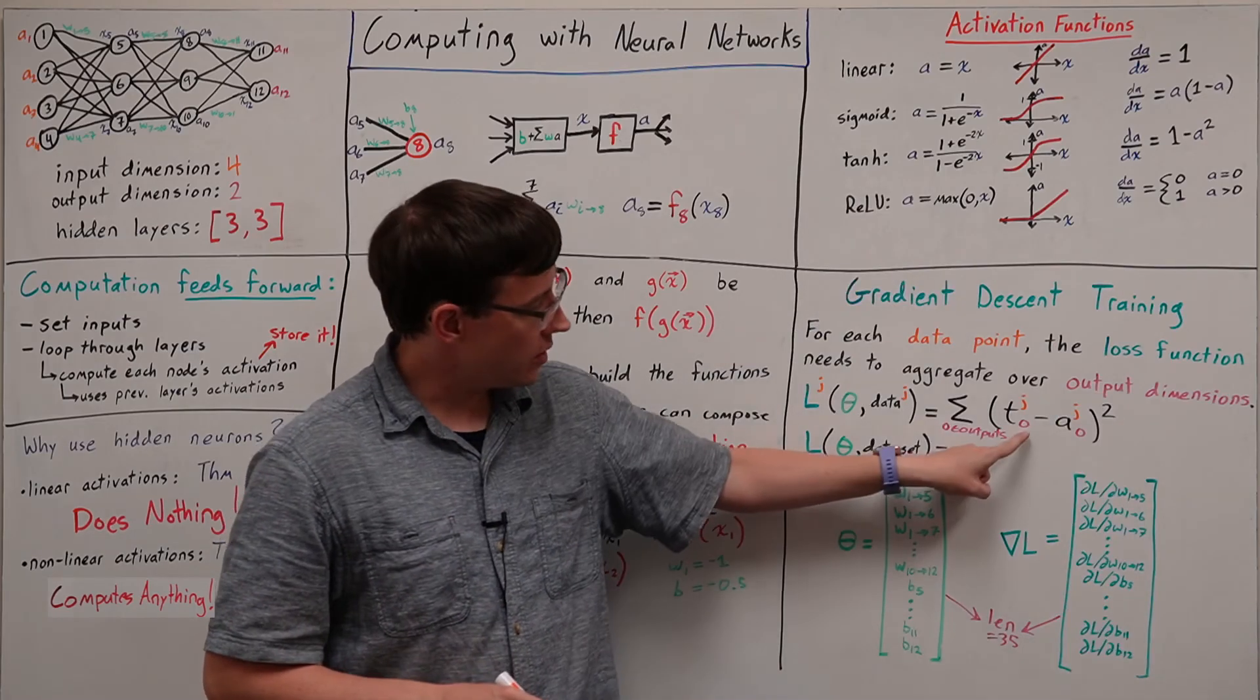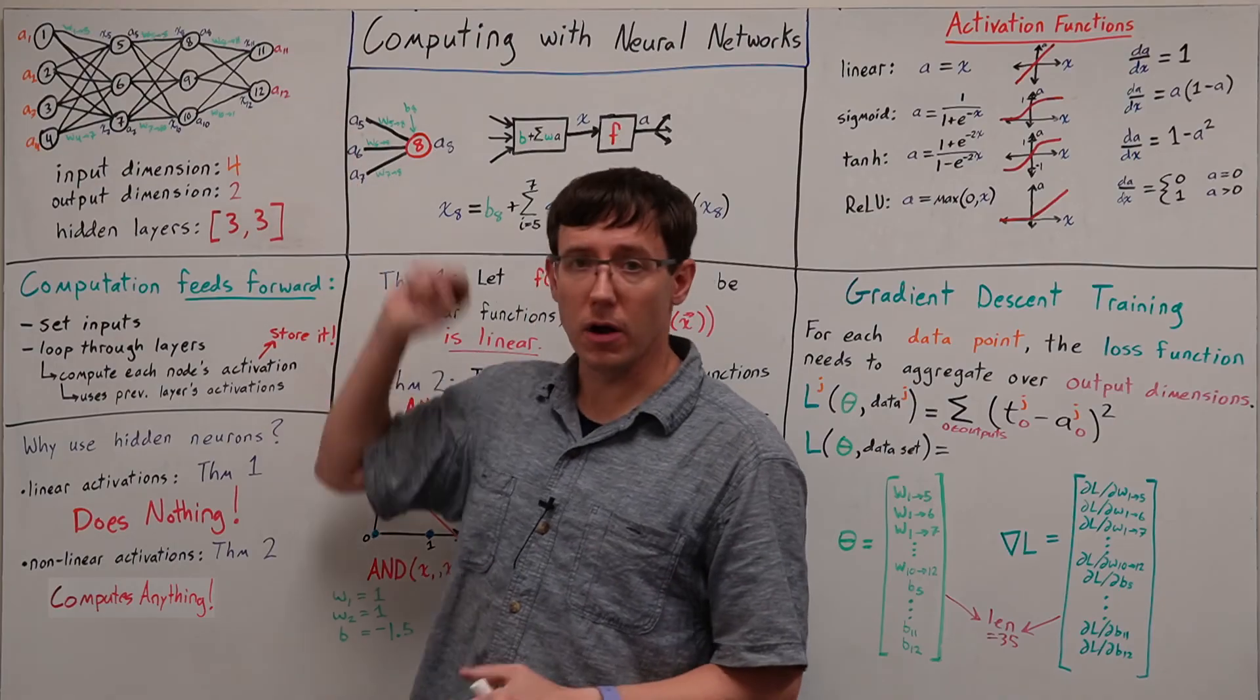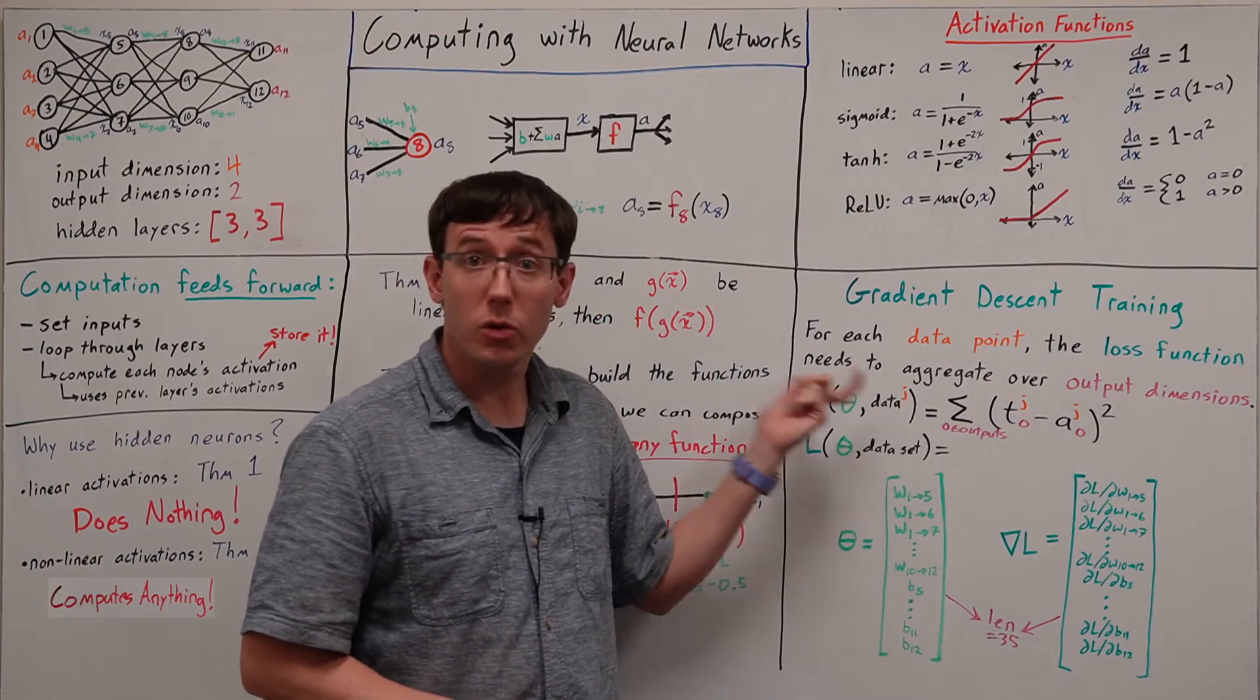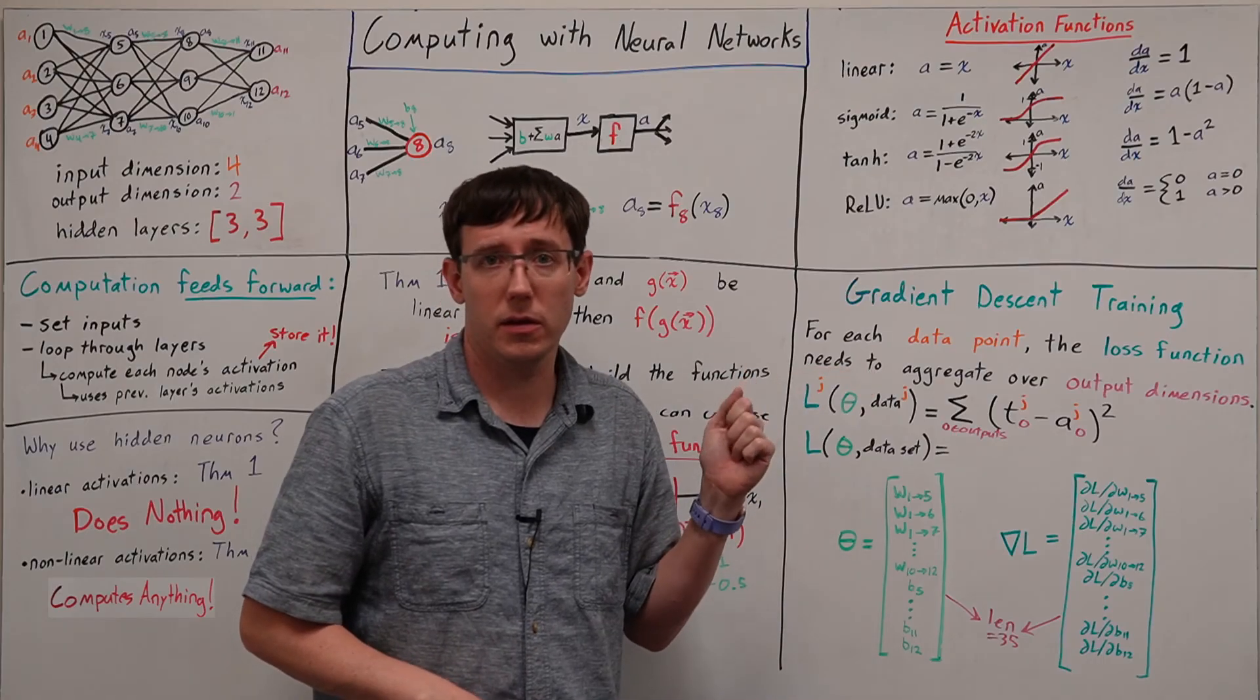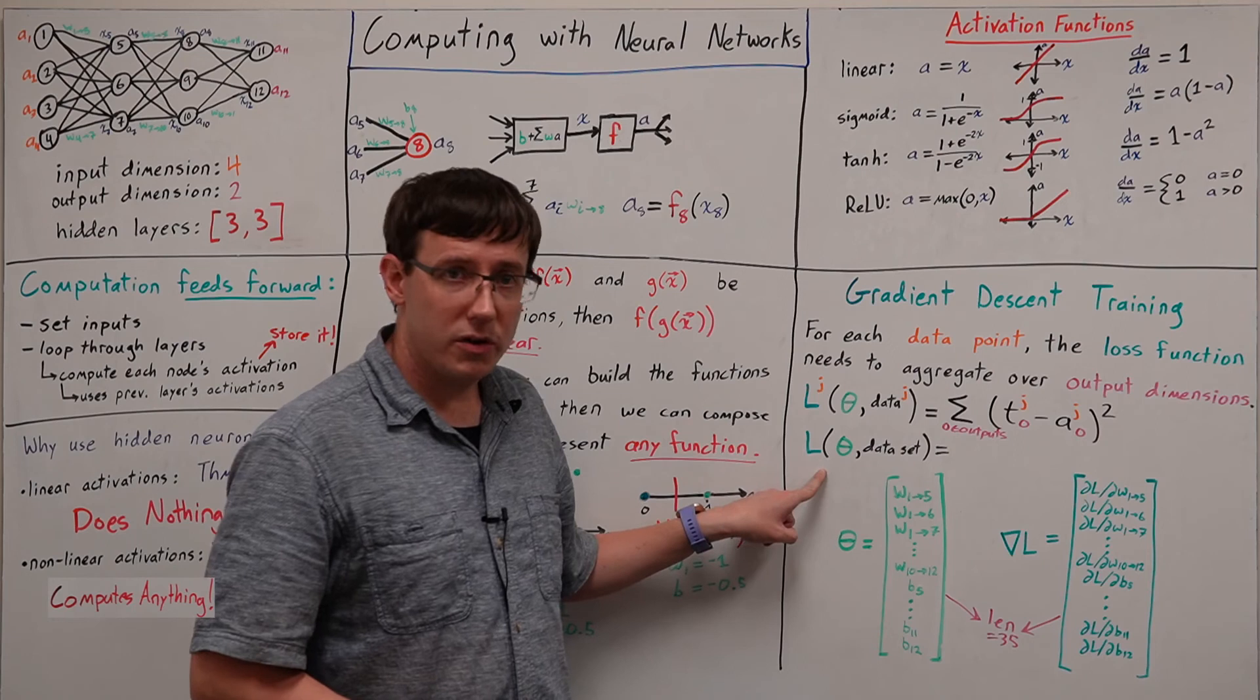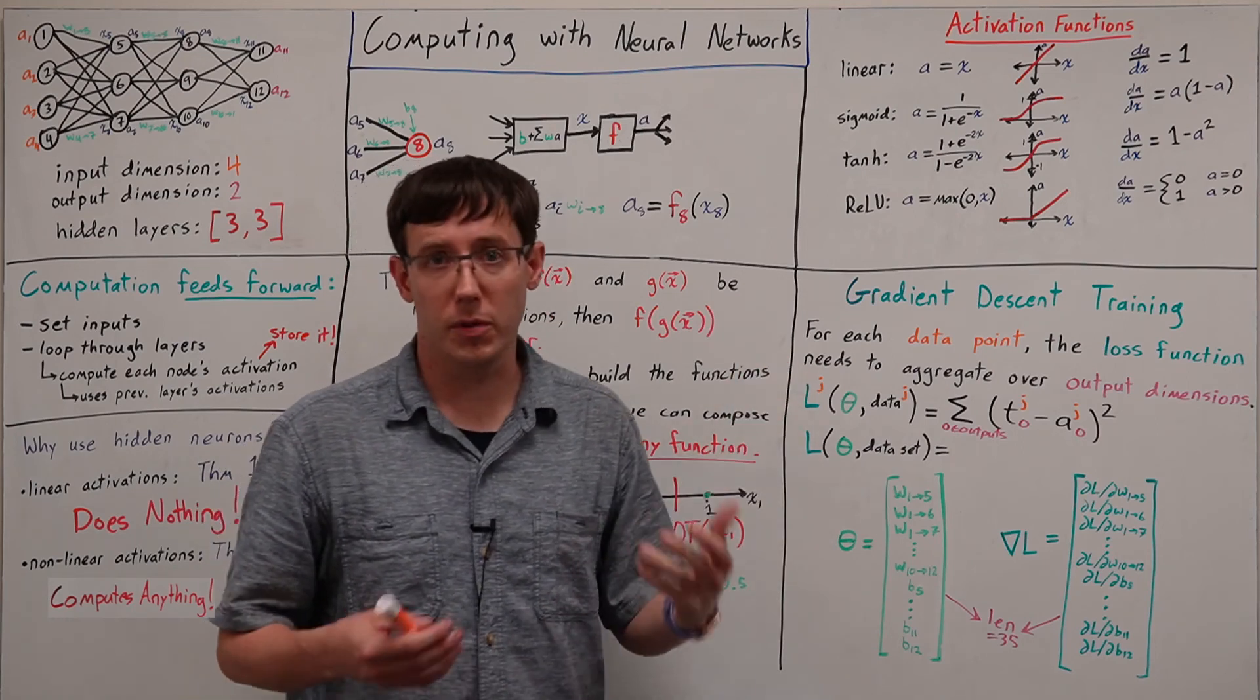And note here that I'm using the subscripts to refer to which neuron we're talking about, and the superscripts to refer to some point in the data set. To get the loss for the data set, we want to take the mean of these squared errors for all of the points.